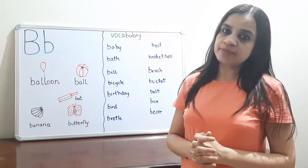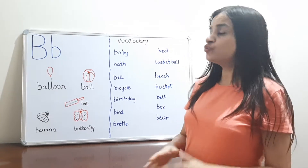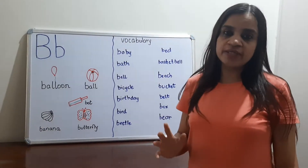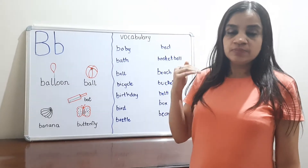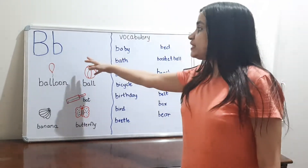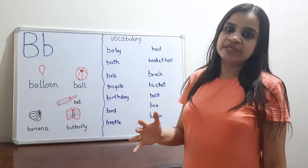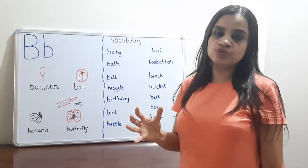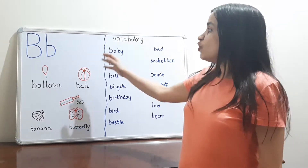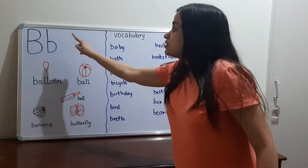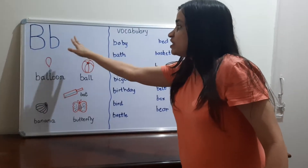Welcome to the channel Orange Class, I'm Magna. In the alphabet series today we are going to introduce letter B to the child. The sound of letter B is 'burp.' I suggest you introduce letter B first, then A, because B is a consonant and it has a definite sound like 'burp.' This is capital B, this is small B.